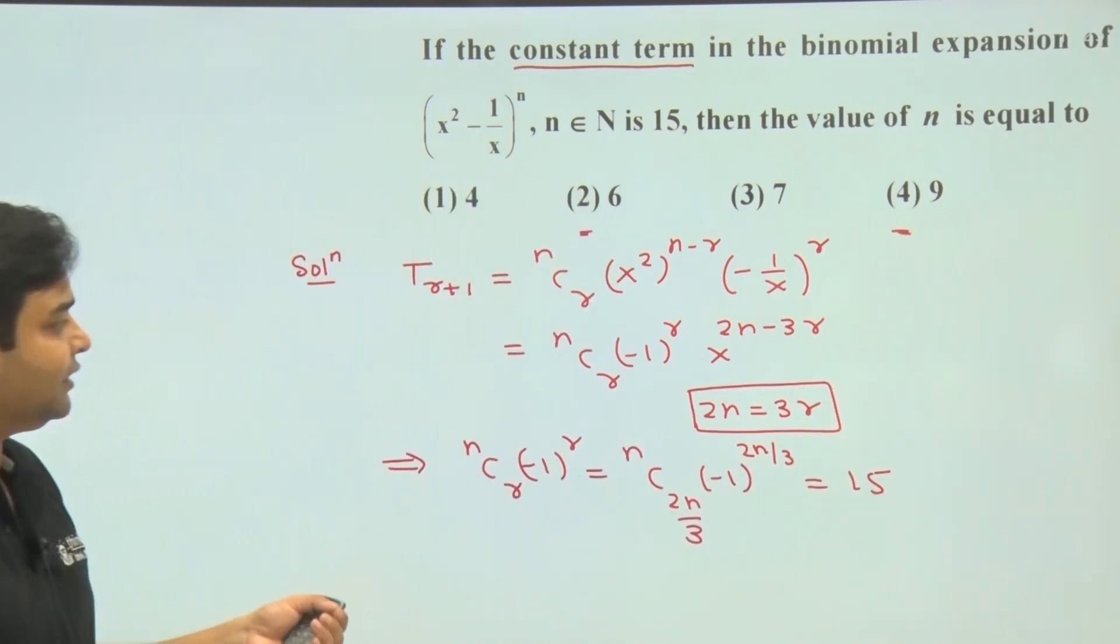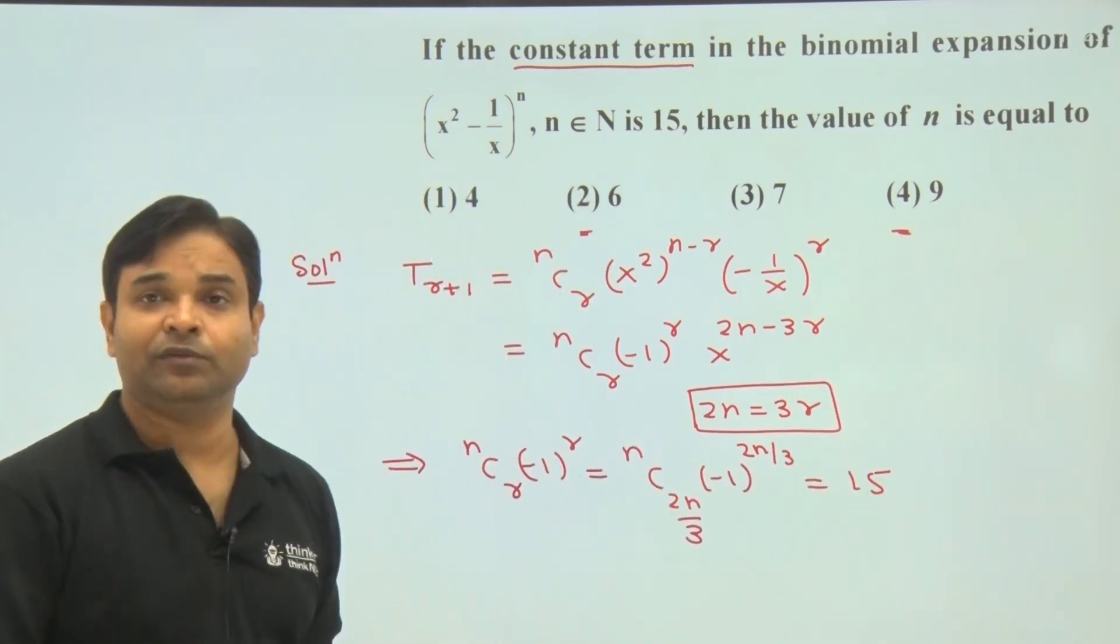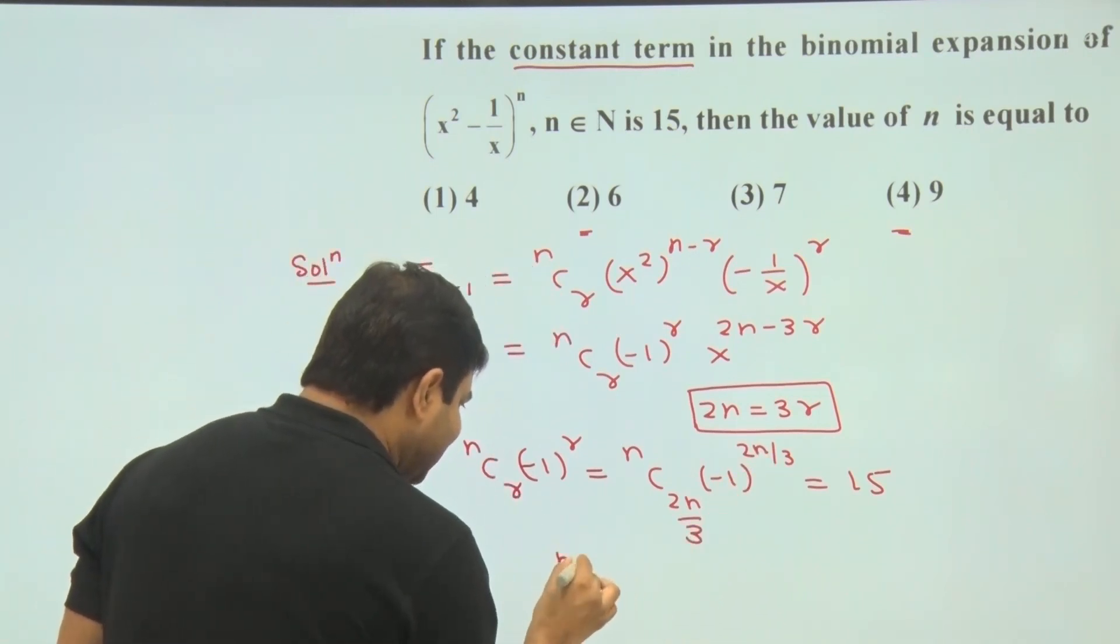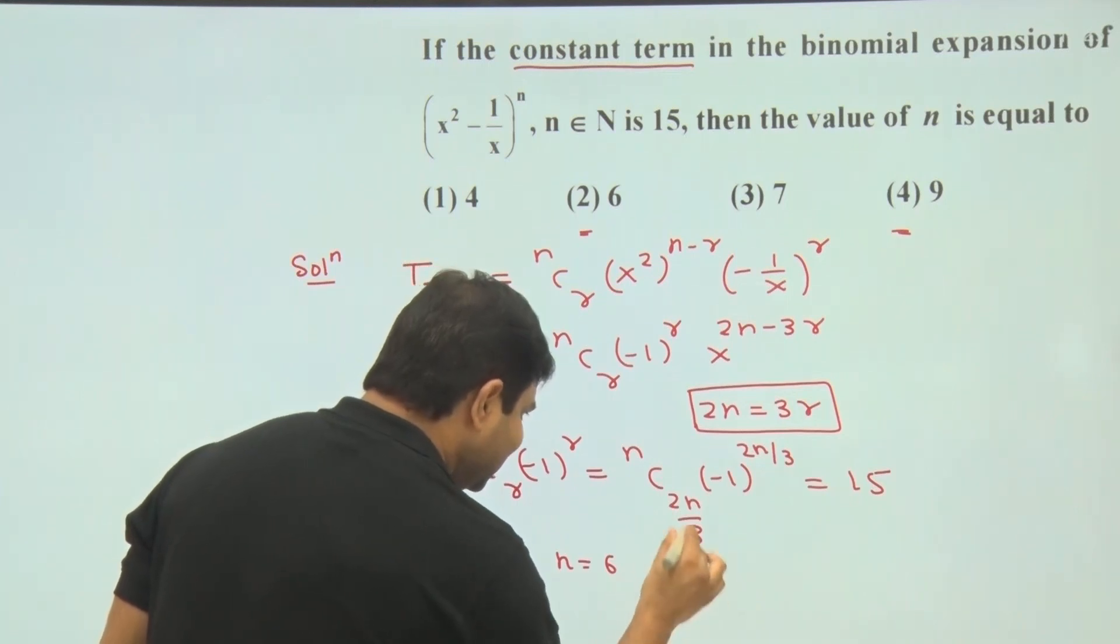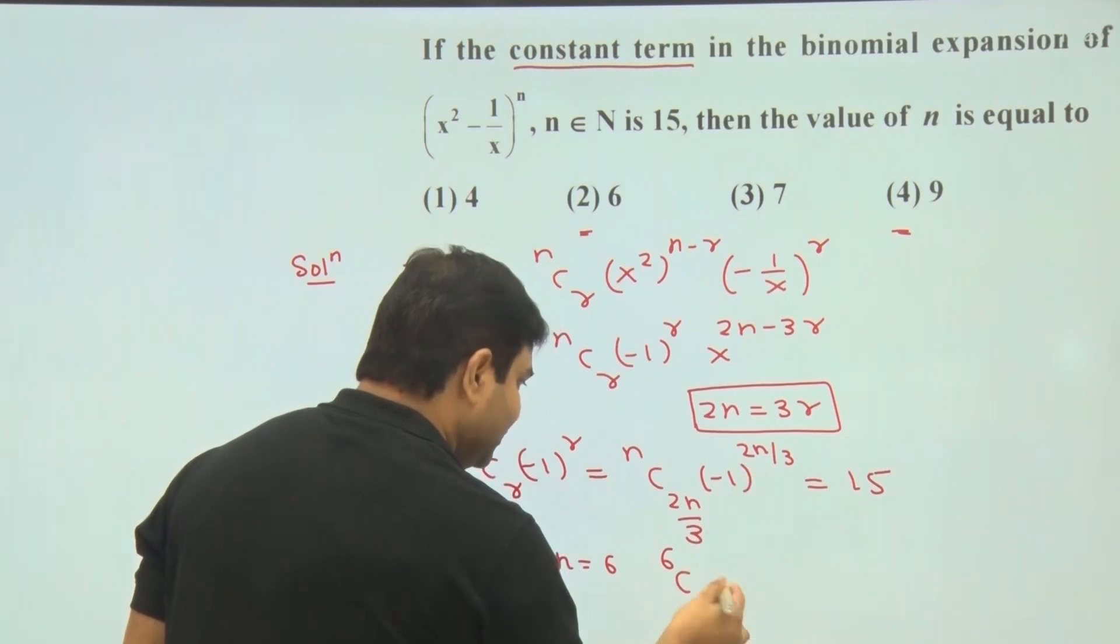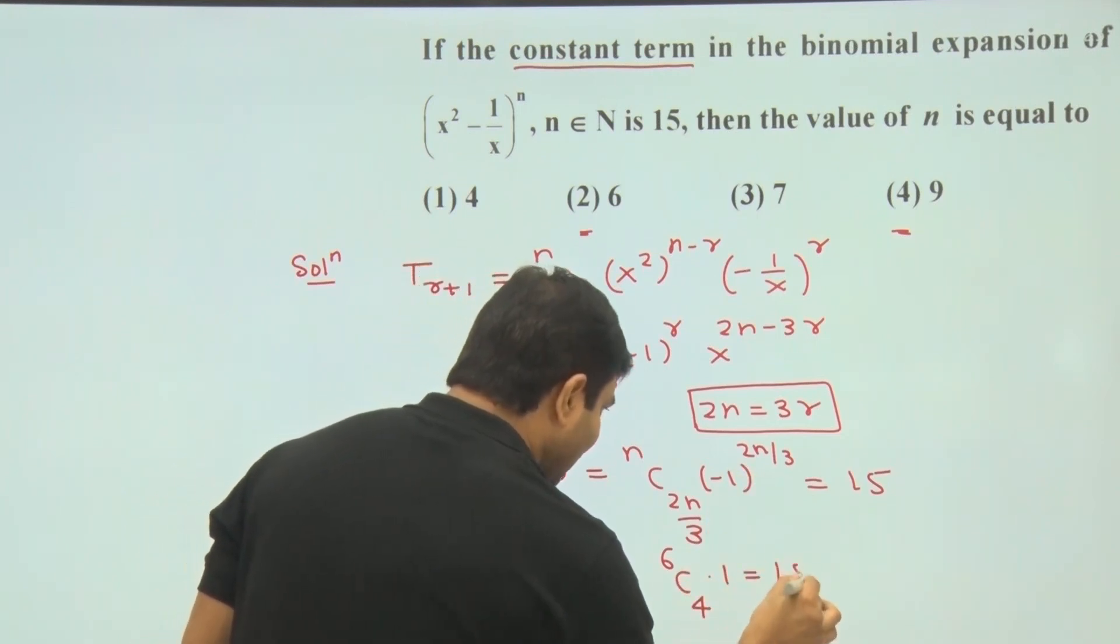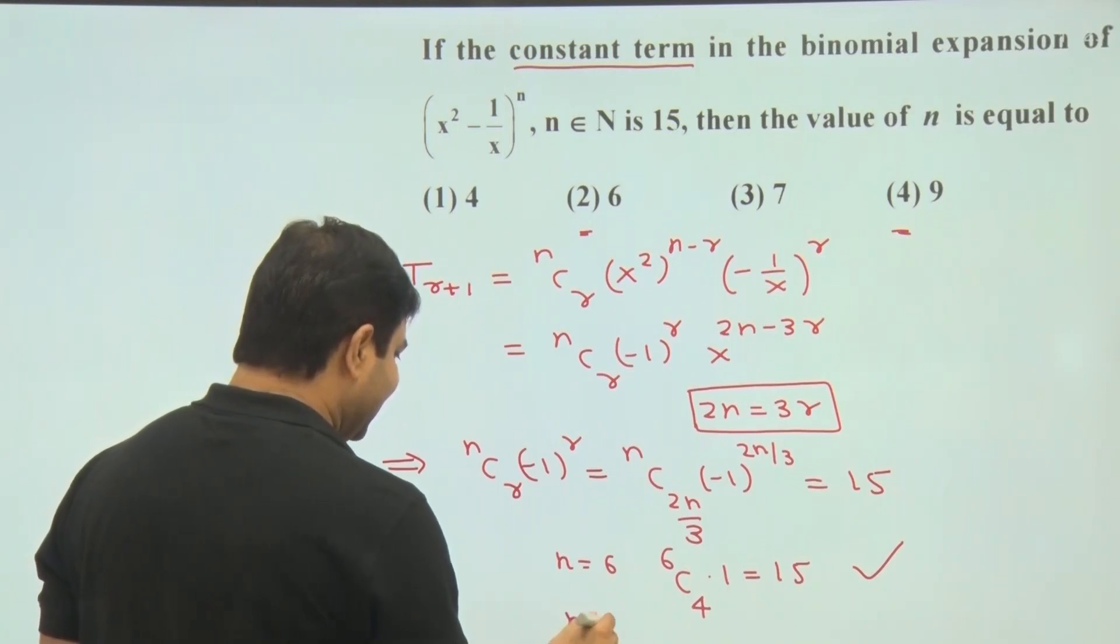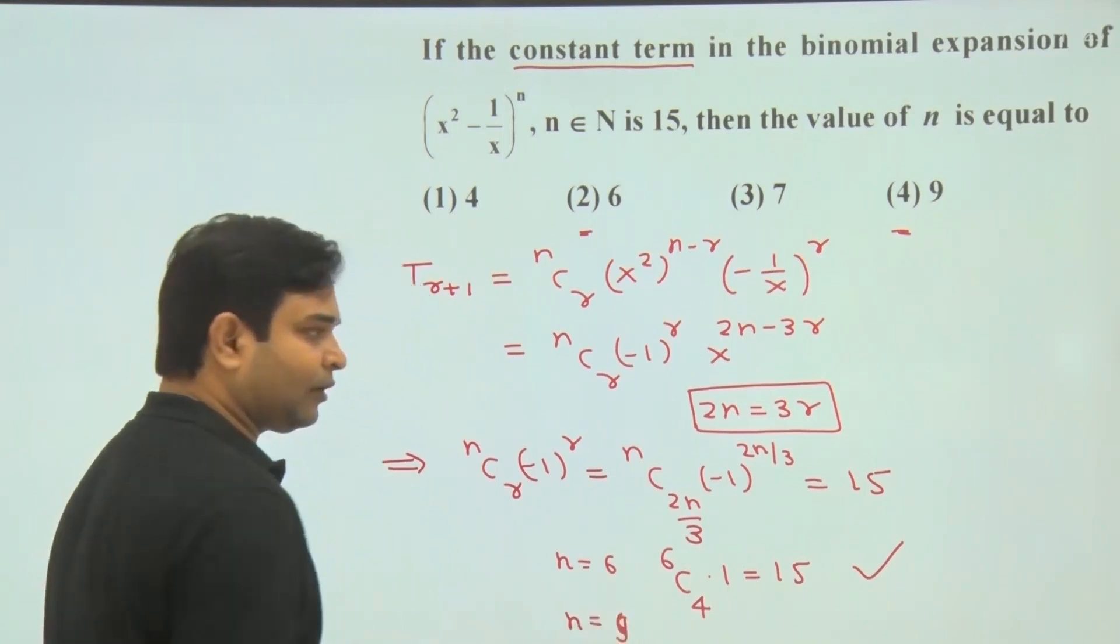So just put n is equal to 6 and n is equal to 9. As we can see, if n is equal to 6, so this term will be 6C4, and this will be 1, and 6C4 is equal to 15. This is correct.